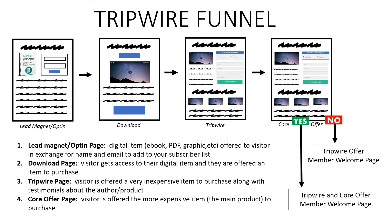So that's the tripwire funnel in a nutshell. We've got the lead magnet or opt-in page, the download page, the tripwire page, the core offer page, and then the member welcome page where they can access the items they purchased. That's the idea behind a tripwire funnel.